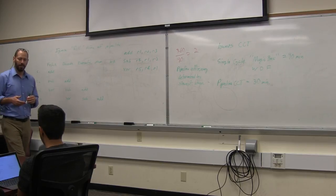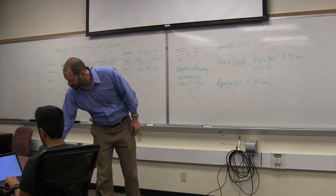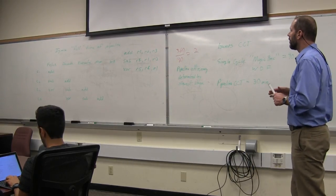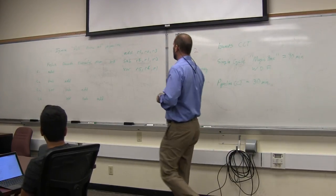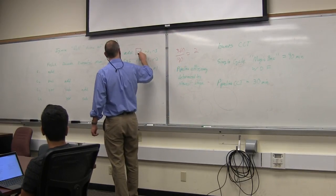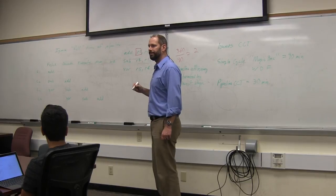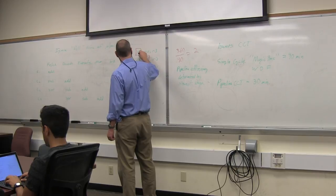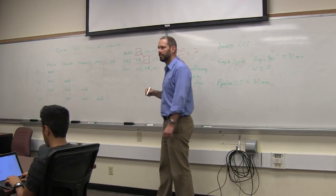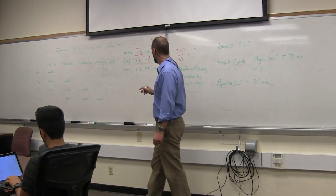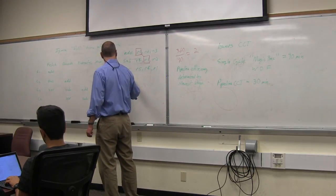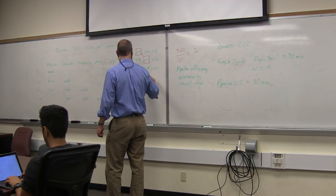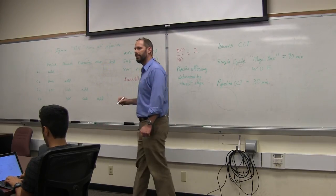In cycle four, our first hazard presents itself. So the observation here is that the add generates a result that's going to be written to register one. That value is then utilized by the subsequent instruction sub, and this is referred to as a read after write hazard.